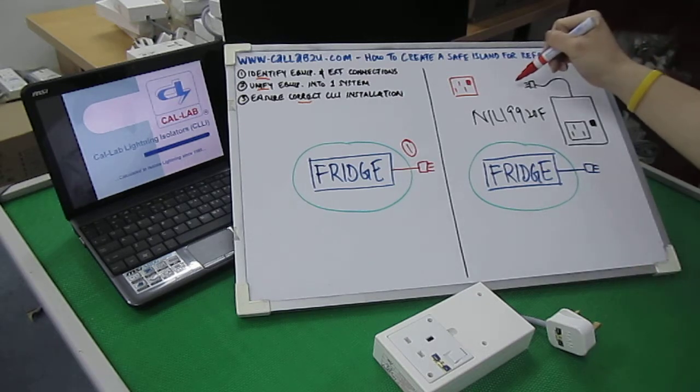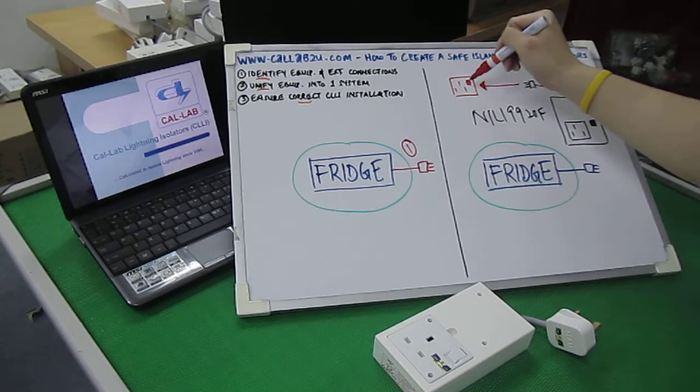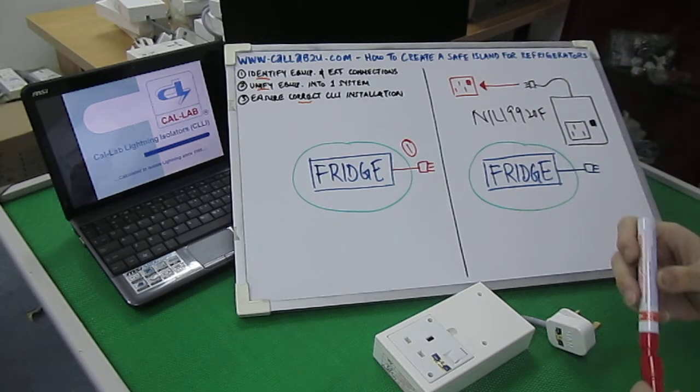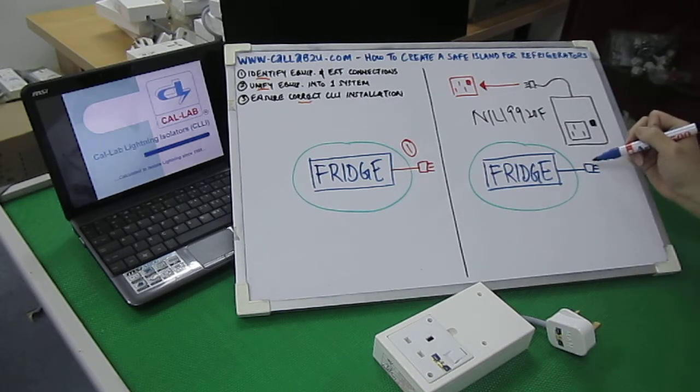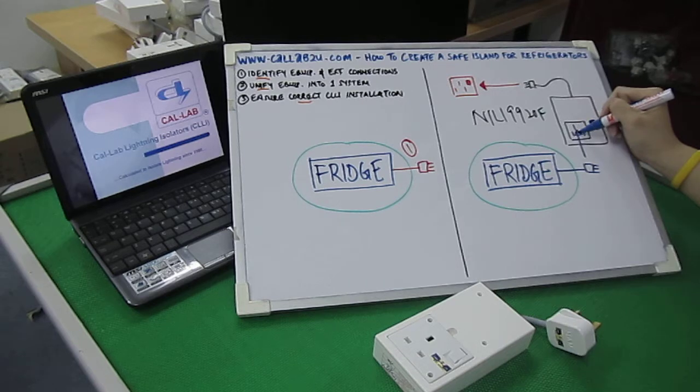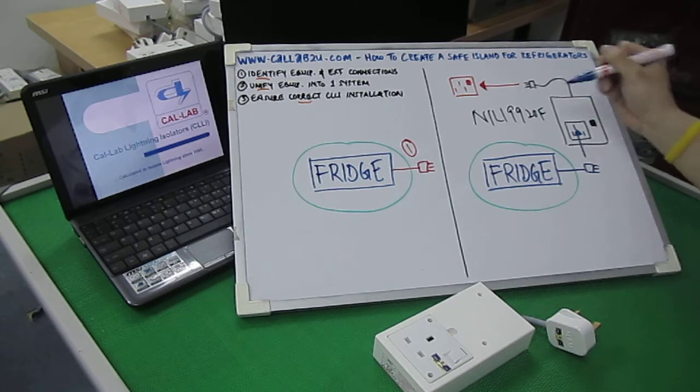Again, the lightning isolator has to be the first point of contact to the wall, so the three-pin plug of the isolator has been plugged directly into a three-pin wall outlet. Then and only then will you connect the refrigerator's three-pin plug into the lightning isolator's three-pin socket, which is the NILI.